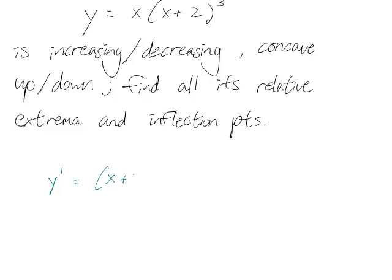So I want the derivative of the first, f prime, times g times the second, plus the derivative of the second, so just the first one, times the derivative of the second, which is 3x plus 2 squared.